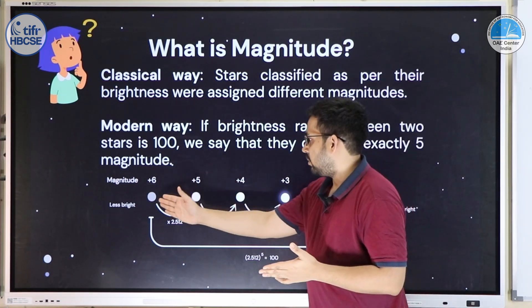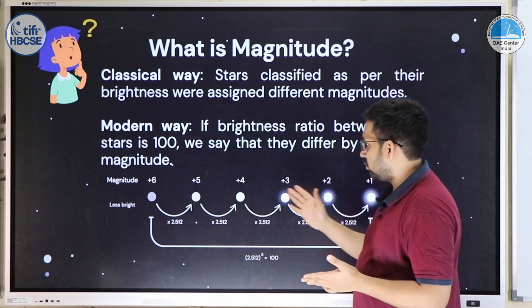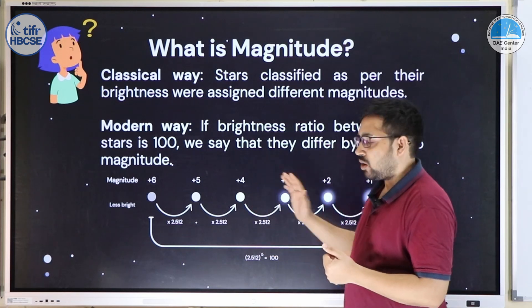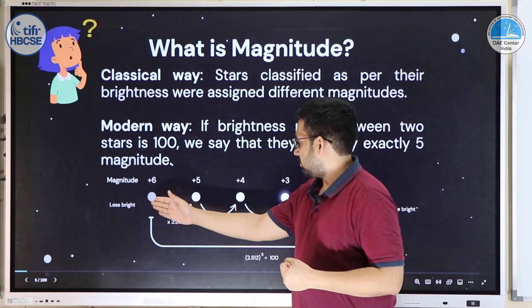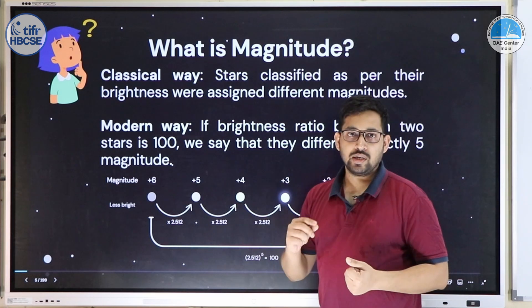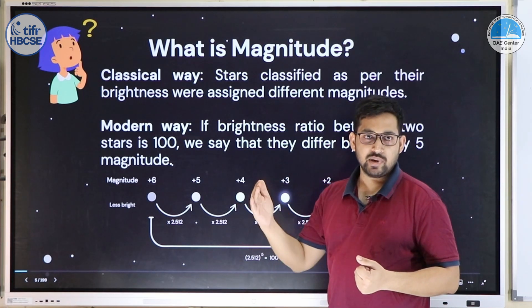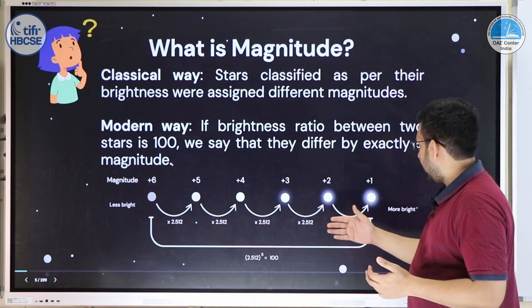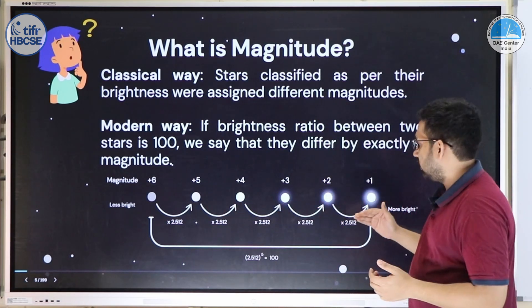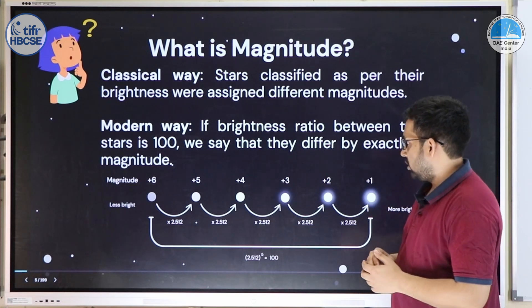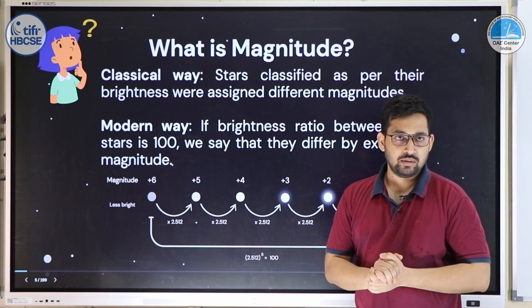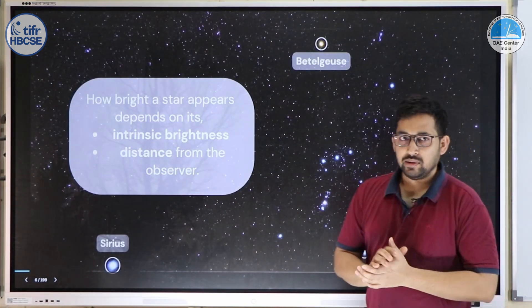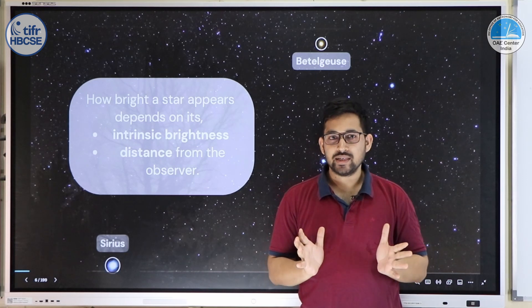For more precise measurement, we define it this way: a jump of 5 magnitudes — from magnitude 1 to magnitude 6 — corresponds to a brightness ratio of 100. That means going from magnitude 6 to magnitude 5, brightness increases by a factor of 2.512, and so on. As the magnitude value decreases, brightness increases. This is the modern mathematical definition.